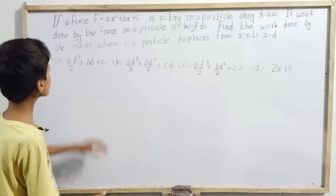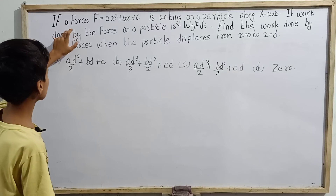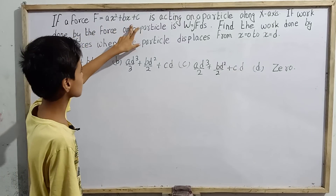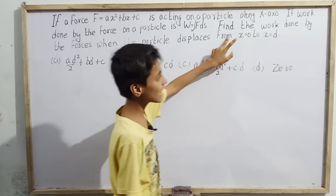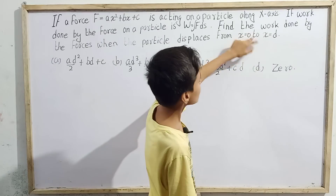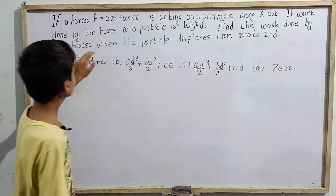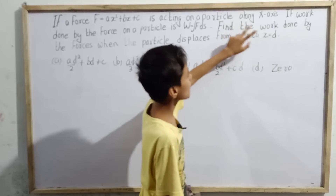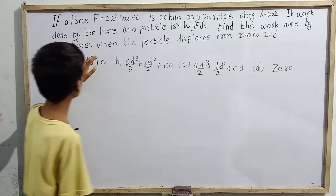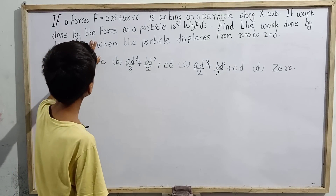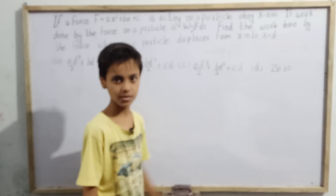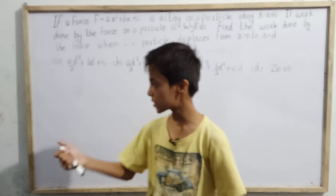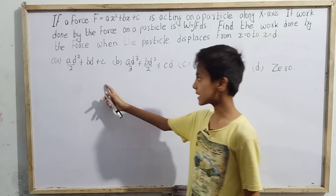Our question asks: if a force F equals ax² plus bx plus c is acting on a particle along the x-axis, and work done by the force on a particle is W equals the integral of F dot ds, find the work done by the force when the particle displaces from x equals 0 to x equals d.